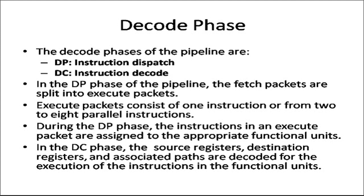In the DP phase, the fetch packets are split into execute packets. An execute packet consists of one instruction or two to eight parallel instructions. Since there are eight functional units in the DSP processor, we can have one instruction or up to eight instructions executing in parallel. During the DP phase, the instructions in an execute packet are assigned to the appropriate functional units — this is the dispatch step.